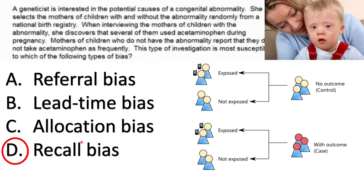On the other hand, those who had no problem would not try to be hyper-alert or focus much on what happened. Even if they took acetaminophen, they just don't remember because they aren't affected — so they appear unexposed. This might give an idea of a stronger relationship between acetaminophen and this abnormality than actually exists. Because the mothers of children with abnormality remember more, this type of bias is called recall bias. It's typical of case-control studies.